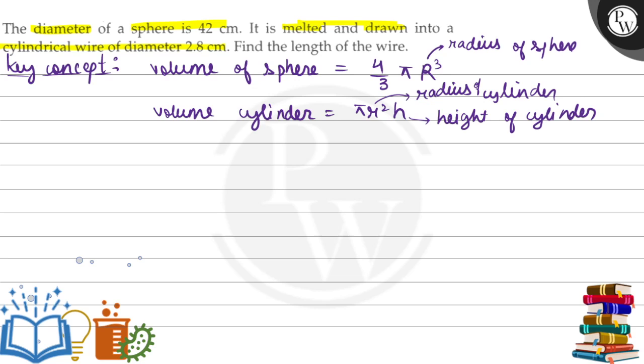Given in the question: the diameter is 42, so capital R equals 42 by 2, which is 21 centimeters. Further, the radius of the cylinder is given as 2.8 divided by 2, which equals 1.4 centimeters.